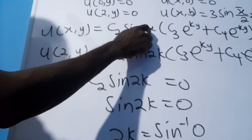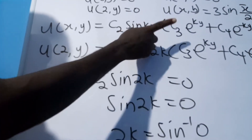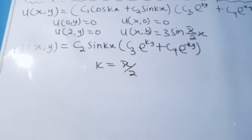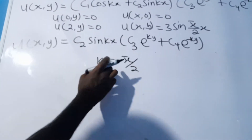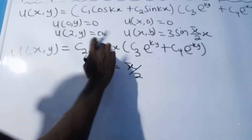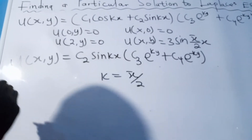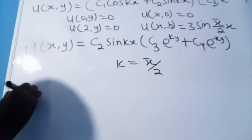We find that 2k = π, so k = π/2. We'll now substitute k = π/2 anywhere we see k in our general equation to see what happens next.